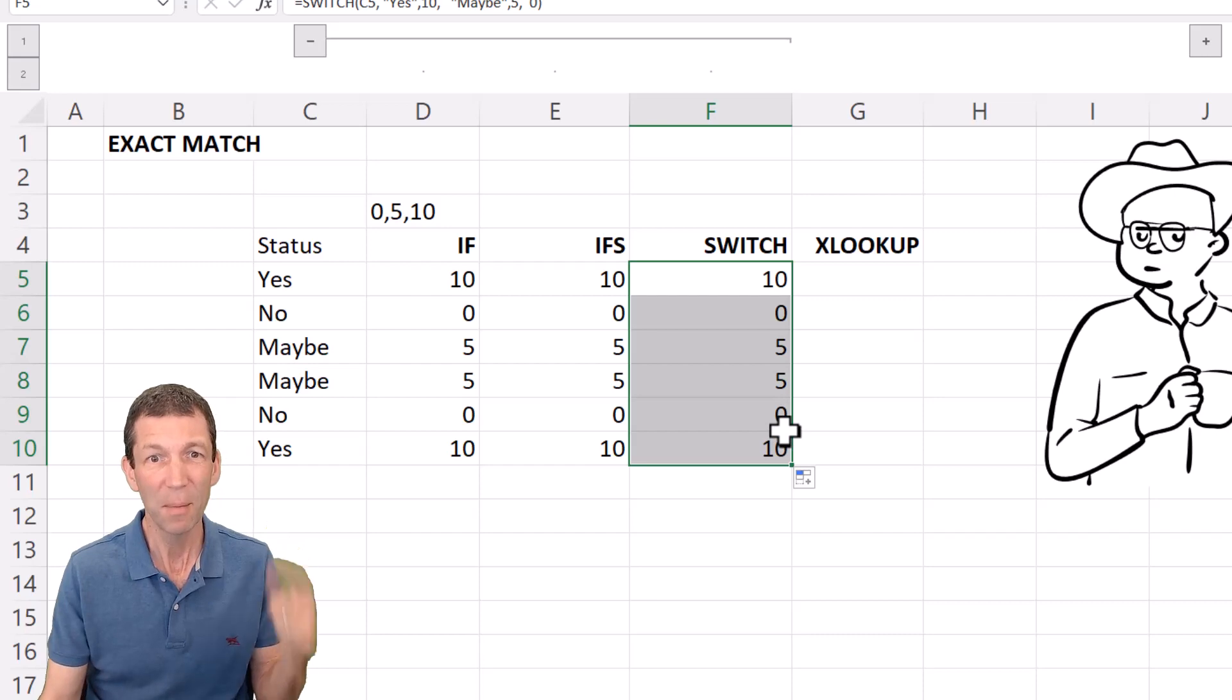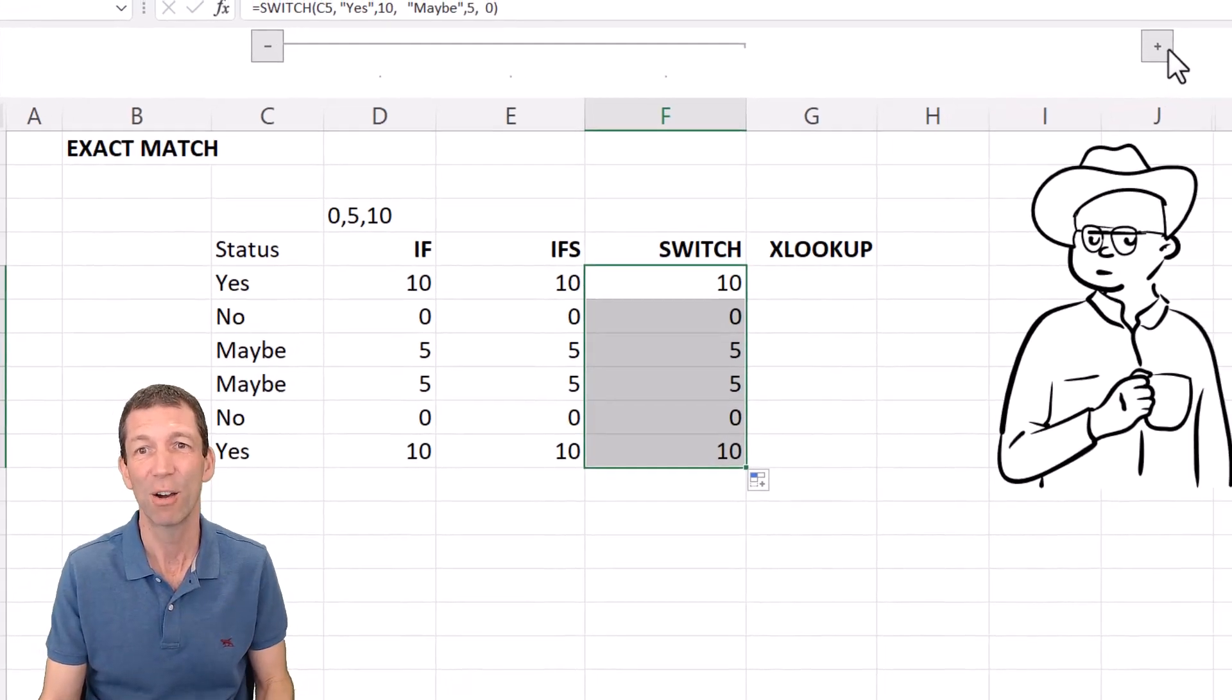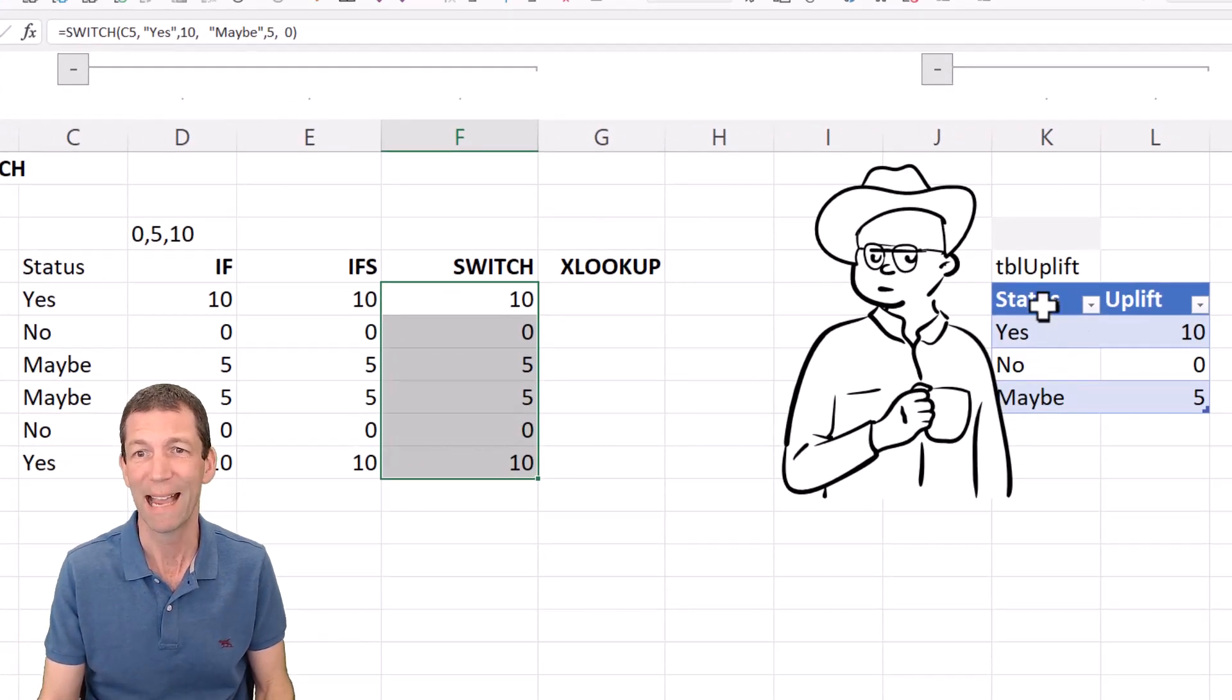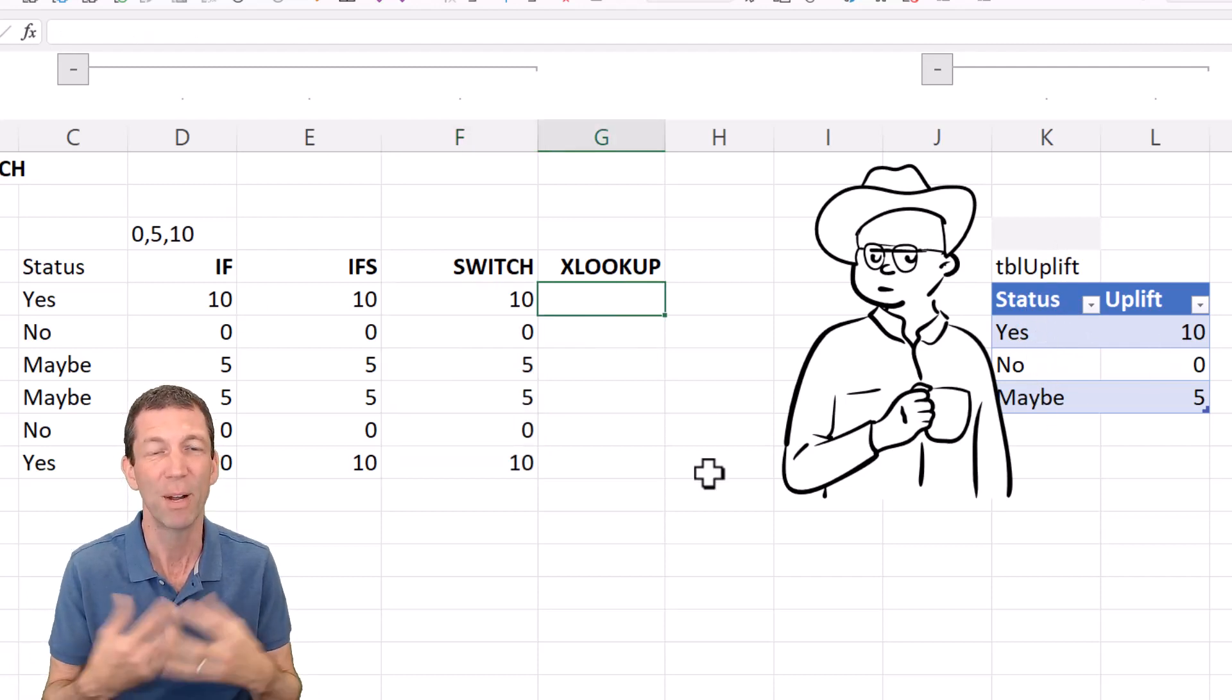Great but probably the better way for doing this exact scenario is the old friend XLOOKUP. So you have a little table with the results in, this is probably much easier, more robust, easier to change these things, easier to add a new element if something shows up.